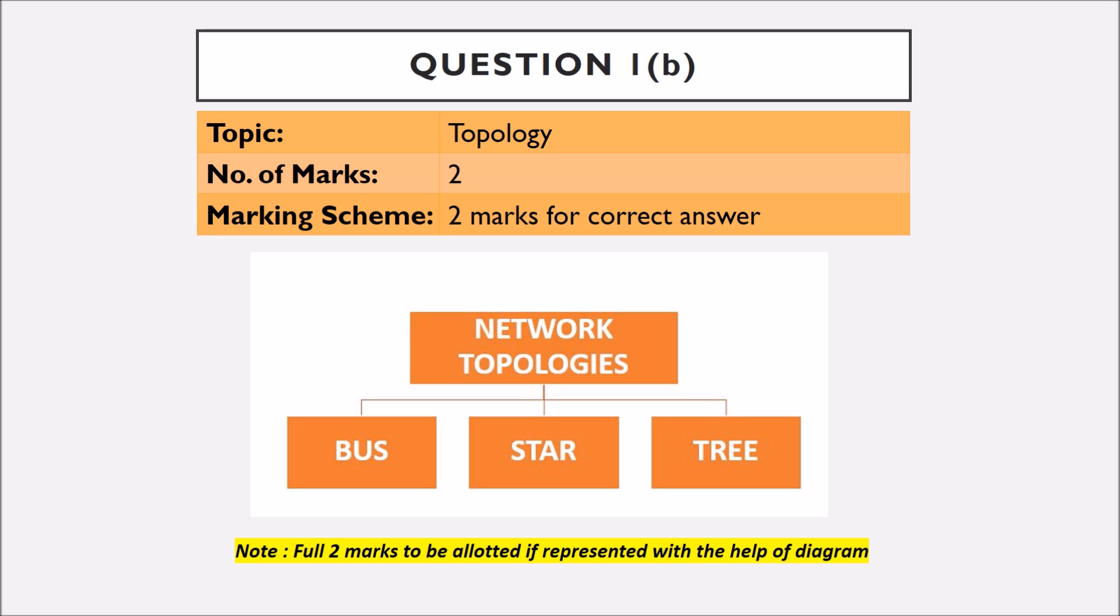Question number one part B is based on topologies like bus, star or tree that is of two marks and two marks are given for correct answer. Please note that full two marks will be allotted if represented with the help of diagram.